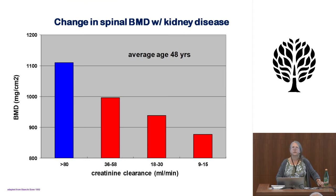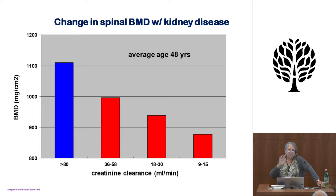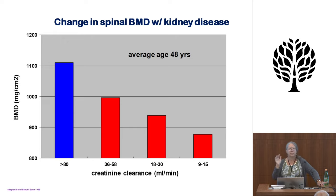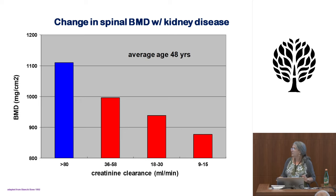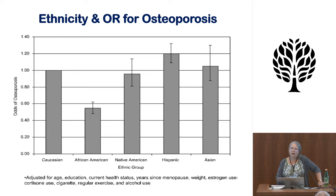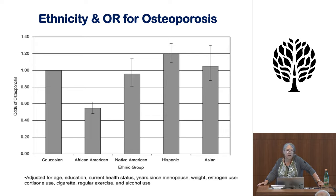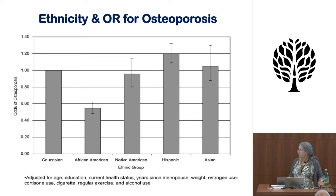In addition, as you get older your kidneys don't work as well. Across the board, the worse your kidney function, the lower your bone mass — that's a complicated problem. And then there's ethnicity: if you're African American, you are less likely to get osteoporosis than other ethnicities, and we're pretty sure there's a genetic component to this, though we're not sure exactly what it is.